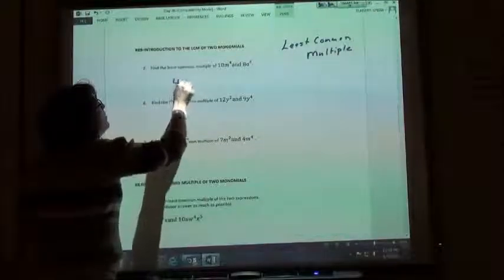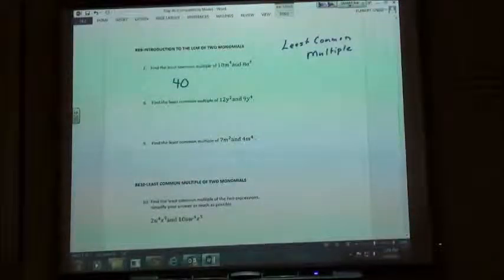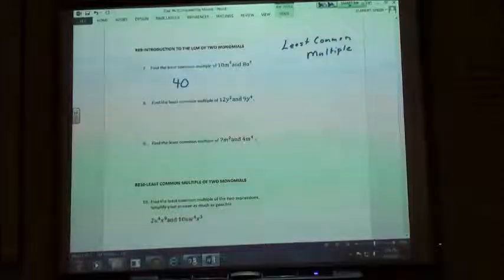So my least common multiple of 10M to the fourth and 8A to the third is going to include 40, which is the least common multiple of the numbers. With the variables you have to include all of the variables to the higher exponent because multiples are bigger. Factors we do smaller, multiples we do bigger.